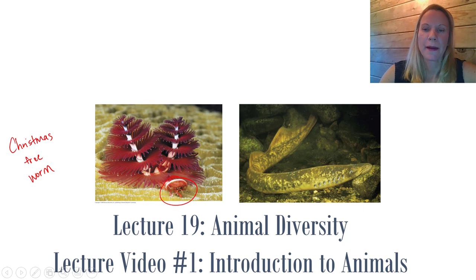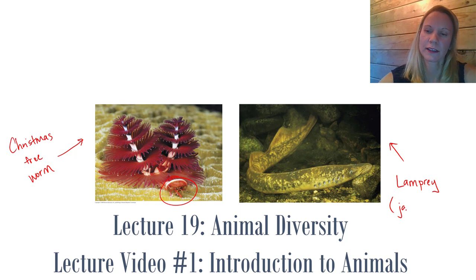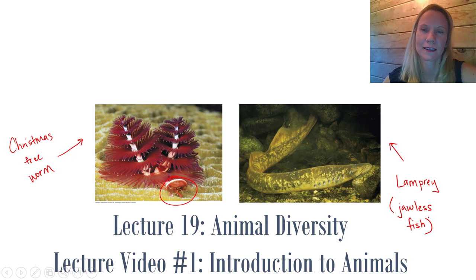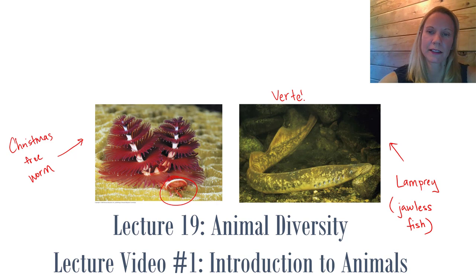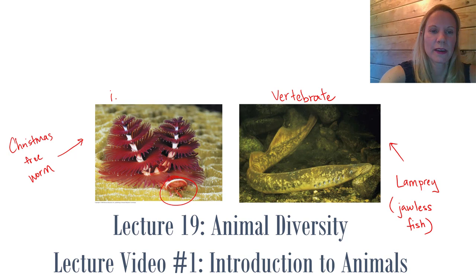How about the animal on the right? Do you recognize this animal? This is a lamprey. A lamprey is a jawless fish. They are also recognized as the oldest lineage of all vertebrates. So this animal would be classified as a vertebrate - that refers to animals that have a backbone. The Christmas tree worm would be classified as an invertebrate, which are animals that do not have a backbone.